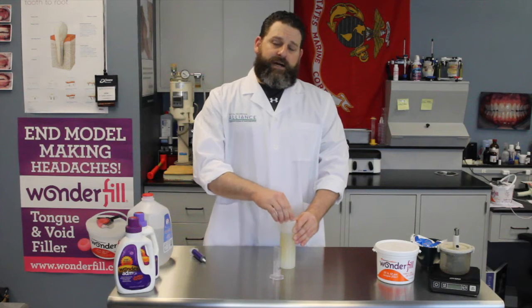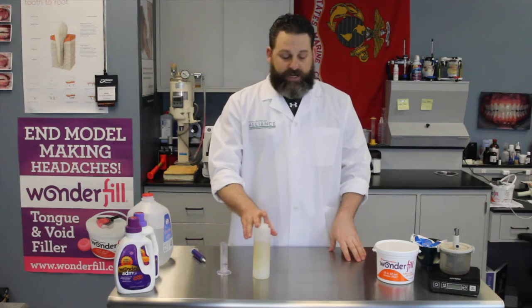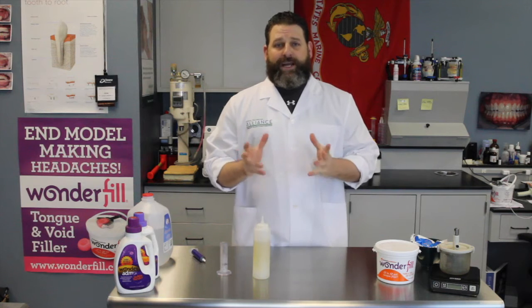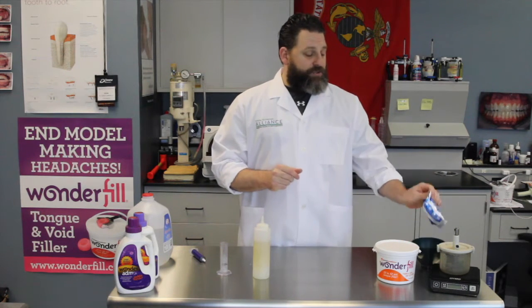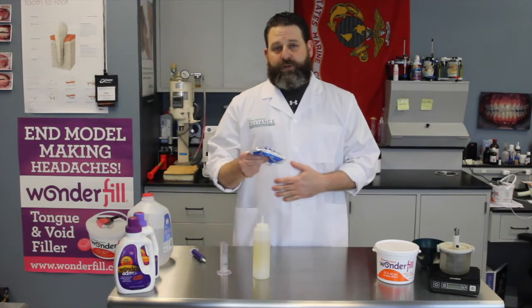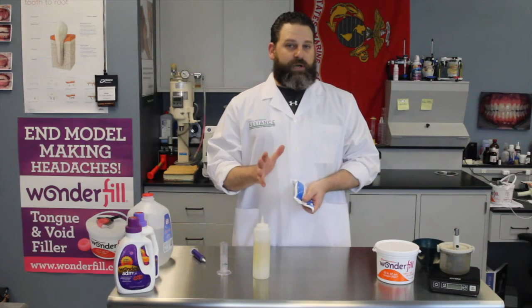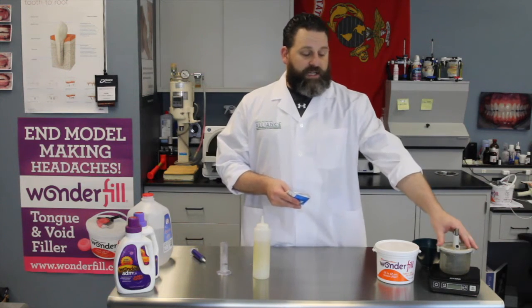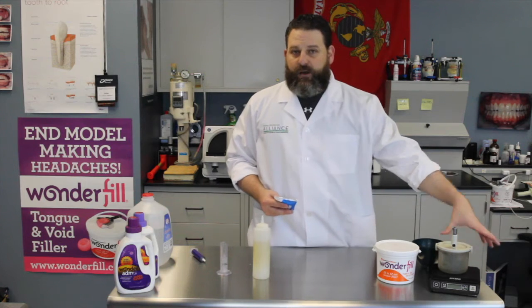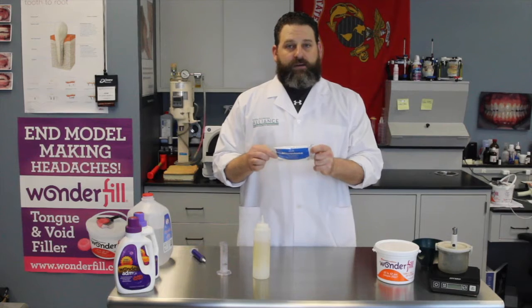So now that we have our proper AdMix all mixed up and ready to go in our ketchup container, we're going to have to know what stone we're going to be using. For the average stone that you're going to be using for an alginate impression, what I use is Whitmix's Micro Stone. Why? Because it's already pre-weighed. In the laboratory, we have about five to six different stones for the different appliances that we're making. The Micro Stone is already weighed out for us.